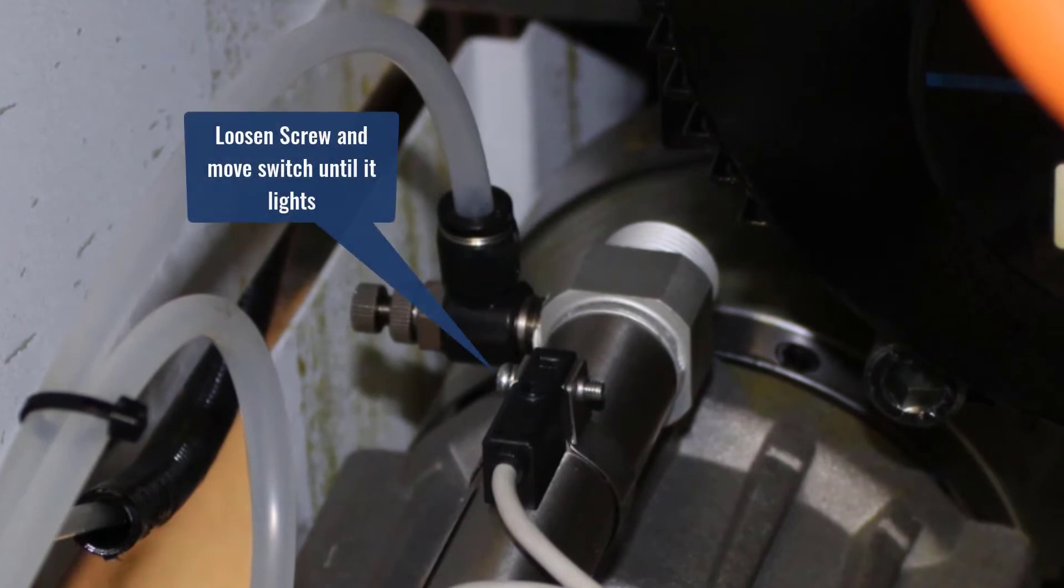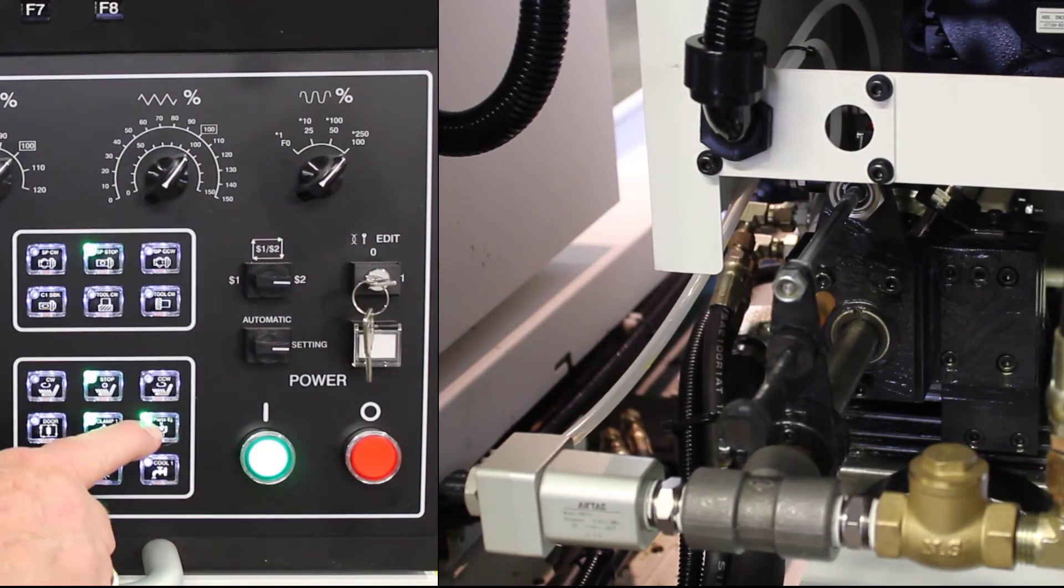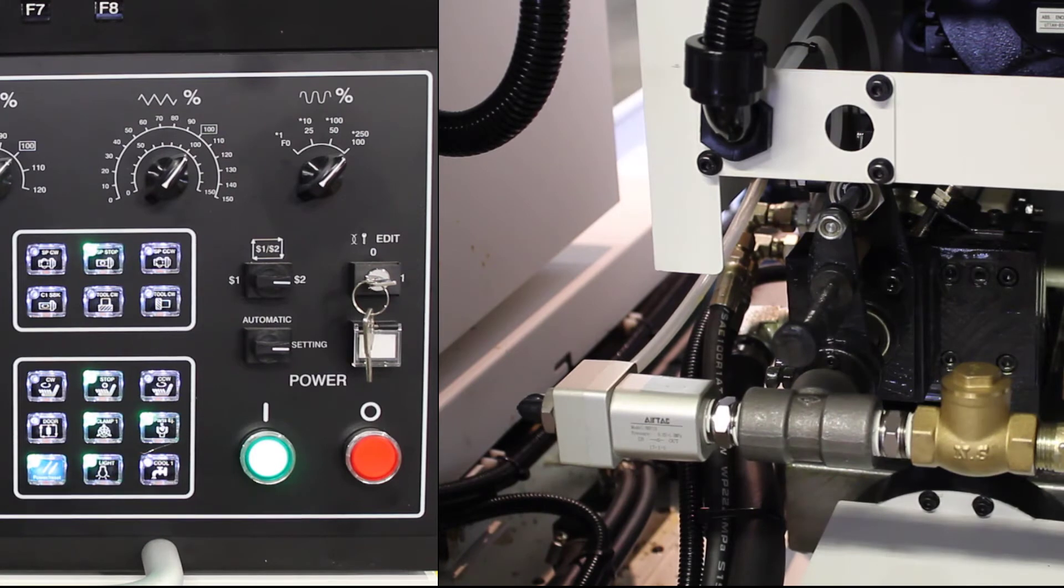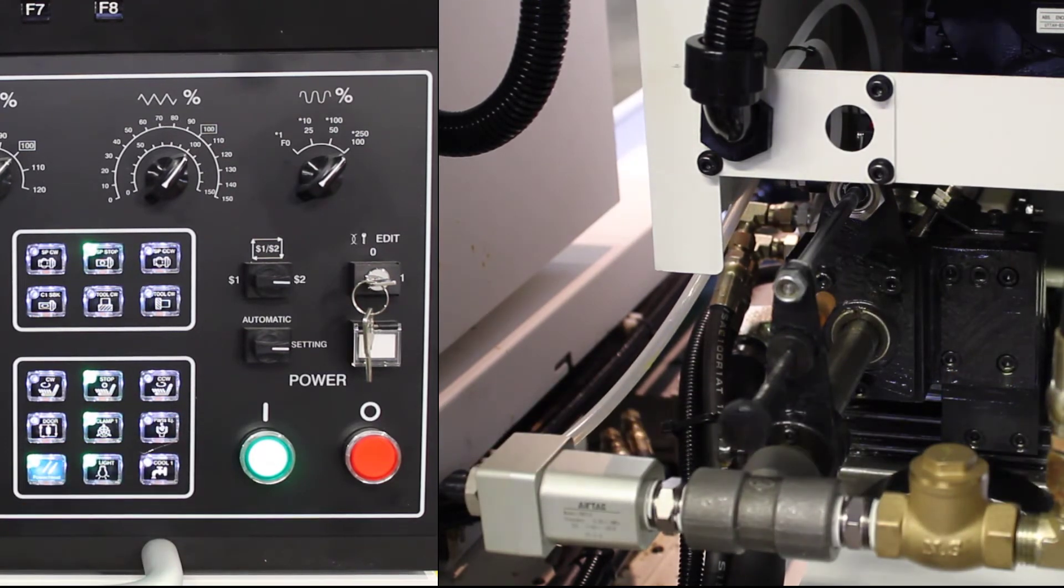Use the small Phillips screwdriver to loosen the screw going through the switch and mounting bracket. Move the switch until the light comes on indicating that the part catcher is in the forward position. Tighten the screw and press the part catcher button to make sure that the pusher moves from the forward position to the retracted position several times.